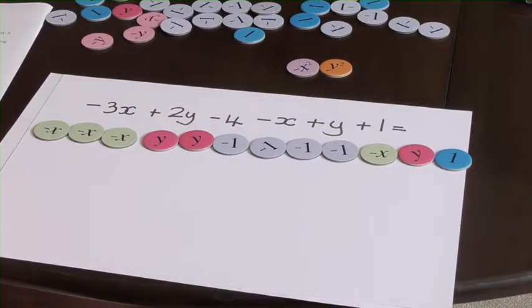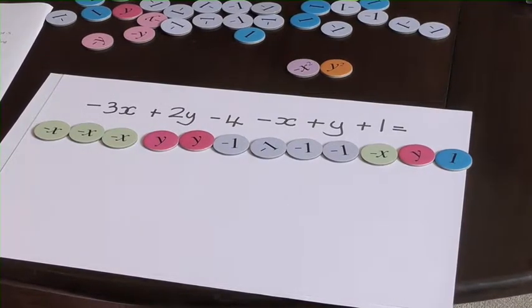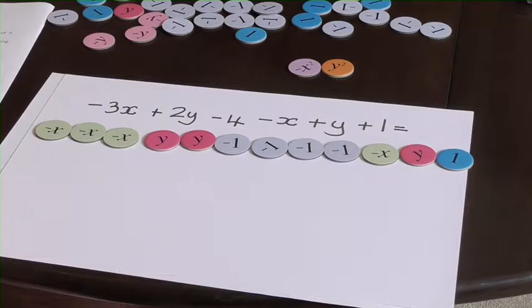OK, so I've modeled my expression, and I've got x's in there, I've got y's in there, I've got 1's, negative 1's, and negative x's, so I'm going to collect them together.